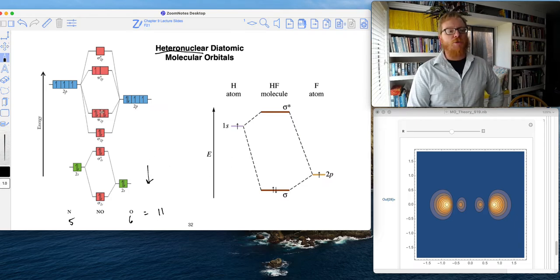So on these MO diagrams, the more electronegative element is drawn lower in energy. And once again, I'm not gonna hold you too responsible for knowing what order they appear in.